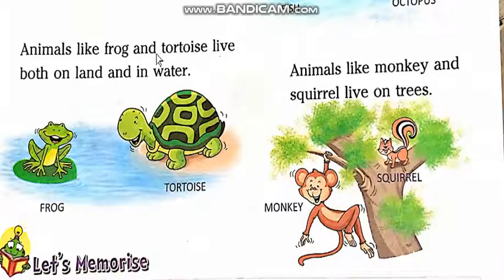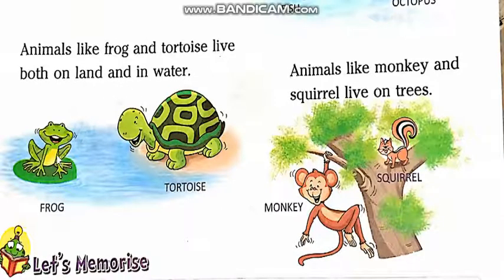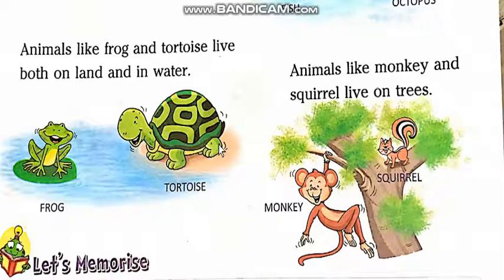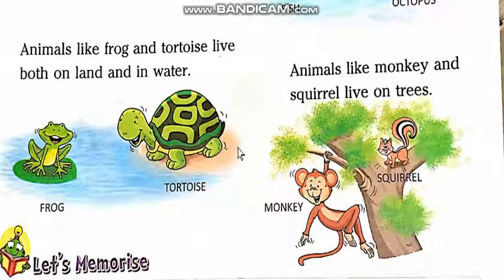Animals like frog and tortoise live both on land and in water. Students, this is frog and this is tortoise. Yeh dono animals paani mein aur land par rehte hain, zameen par rehte hain. Both these animals can live in water and on land.